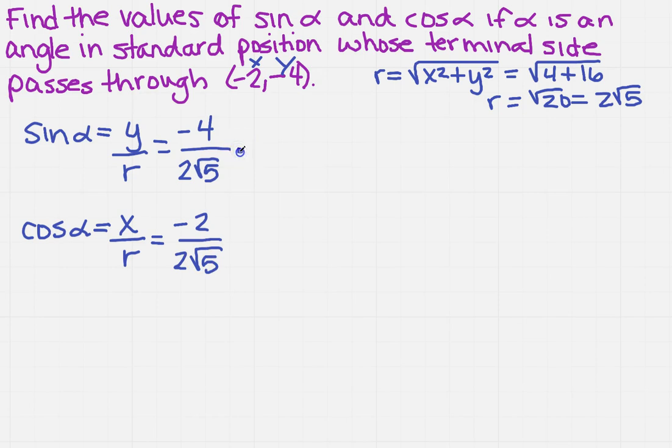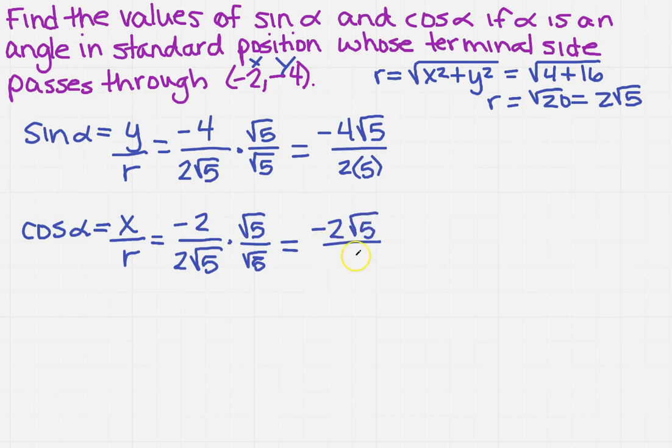That's a fancy word for saying I need to multiply the top and the bottom by the radical. I'm going to do that to each one of these. On the top, I'm going to have minus 4 square root of 5 over 2 times 5. And down here, minus 2 square root of 5 over 2 times 5.